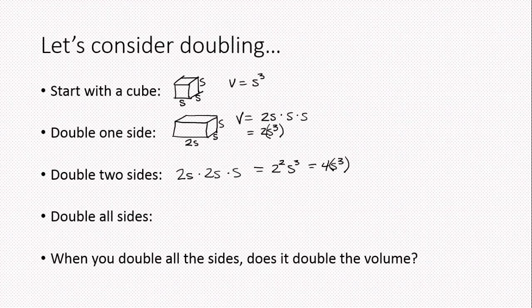Compared to the original volume of s³, doubling two sides makes the volume four times as big. Now what happens when we double all three sides? We have 2s × 2s × 2s, which is (2s)³ = 2³ × s³ = 8s³.